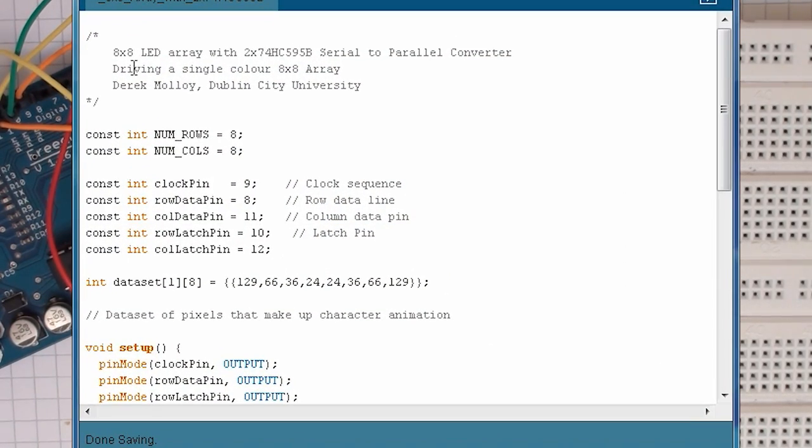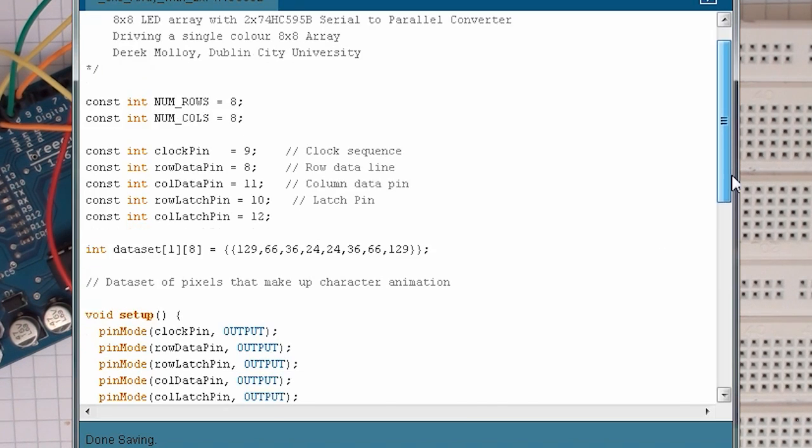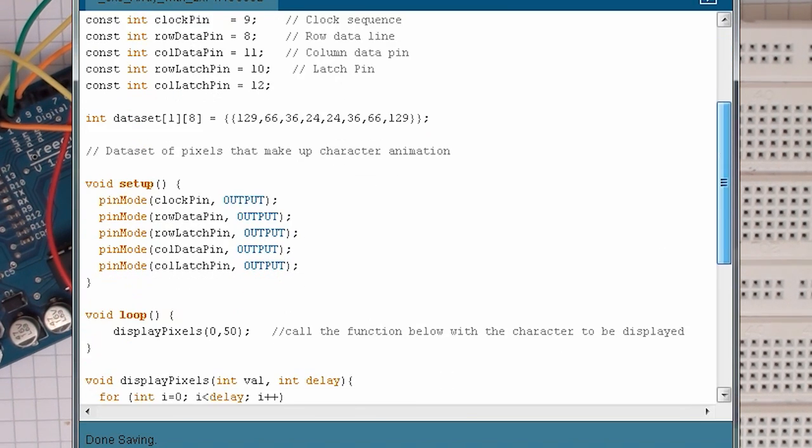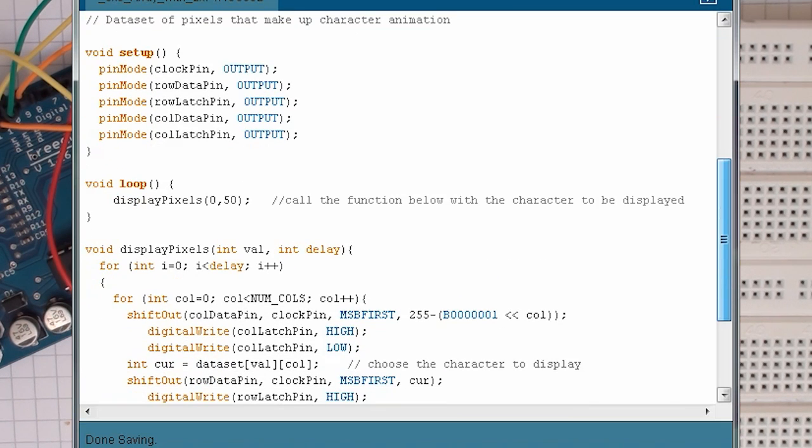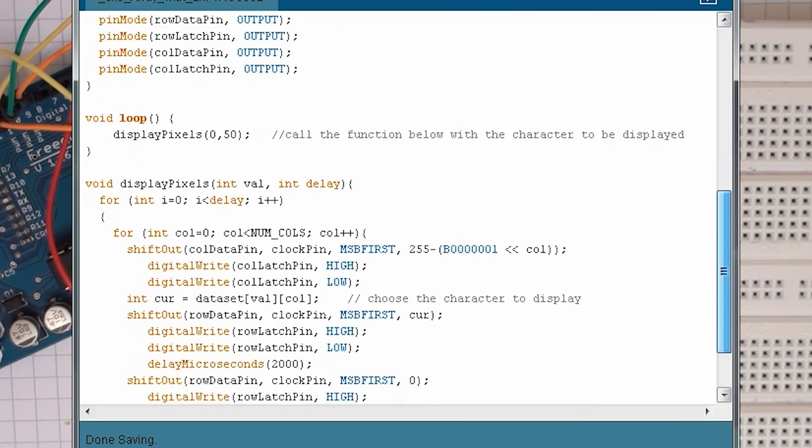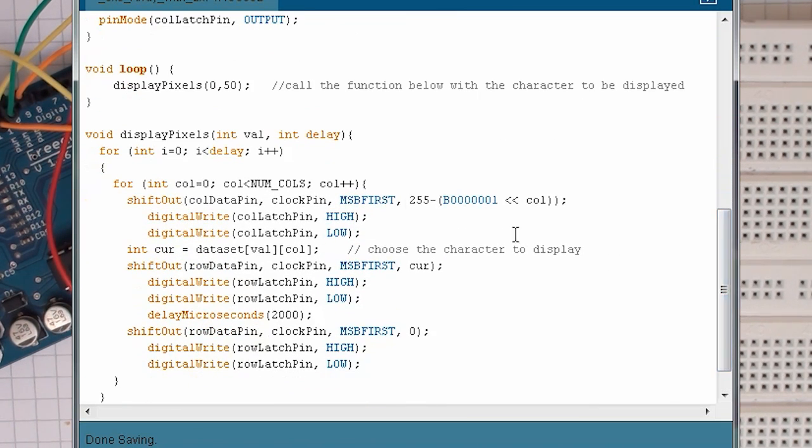We have to write a set of code to describe how we turn on the rows and columns. You can see I have identified the individual pins for the Arduino for the rows and columns. I have also got my data set that makes up the X that we place on the display. We have to set all our pins to be output pins, and my loop function simply loops around the same values over and over again.